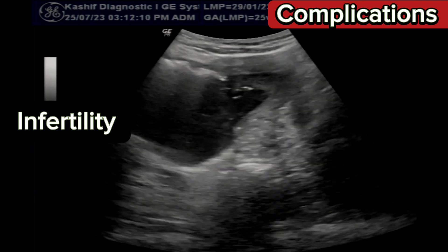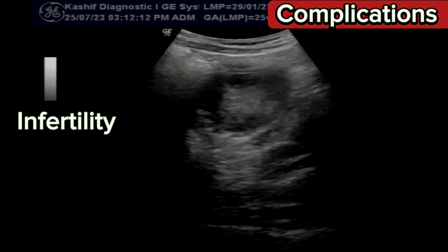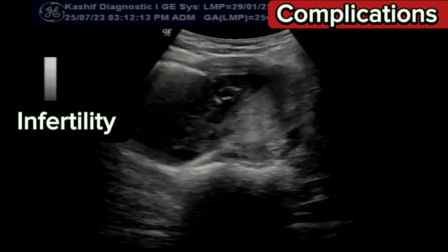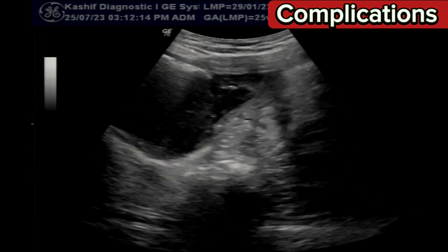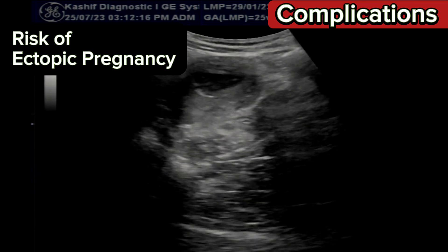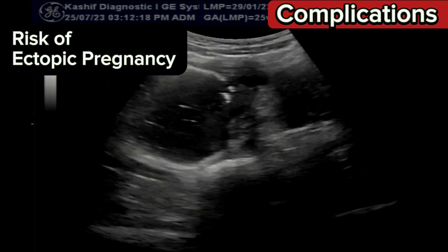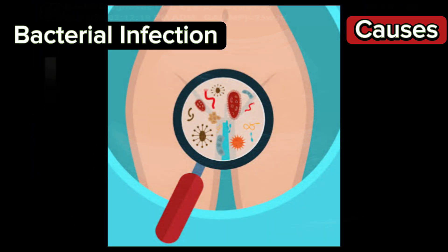It is an important cause of infertility. It can block fallopian tubes and increase the risk of ectopic pregnancy. It is usually caused by bacterial infection and the most important causes are sexually transmitted infections like STIs.